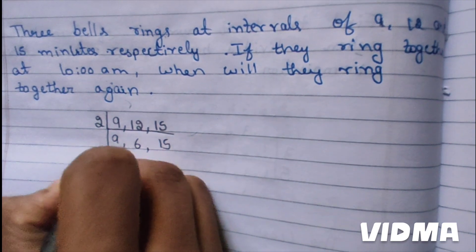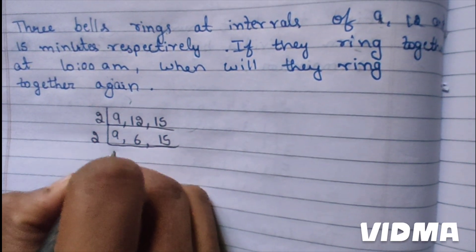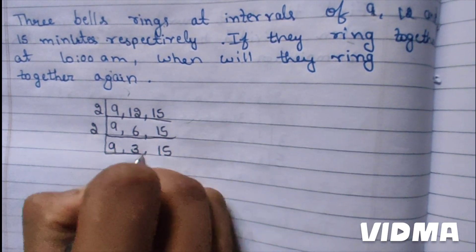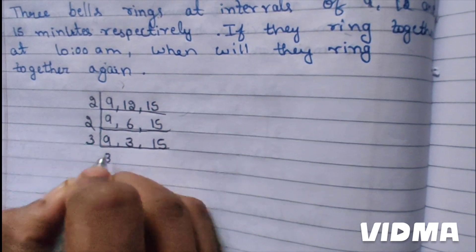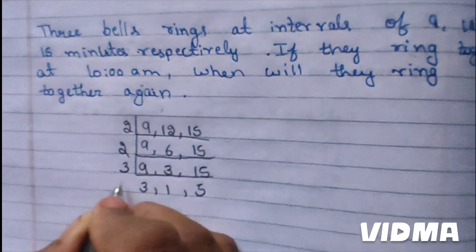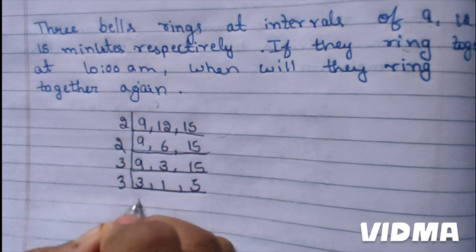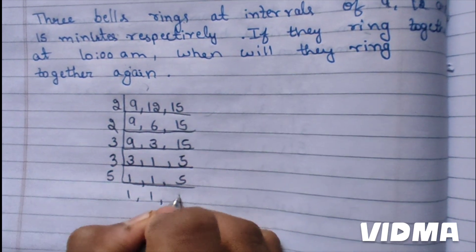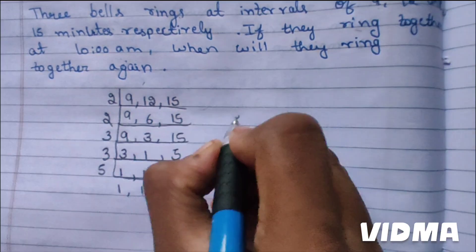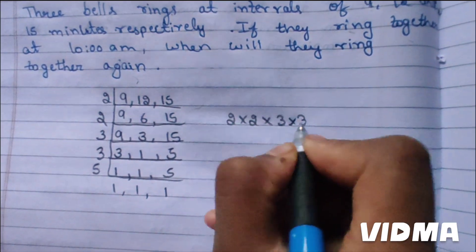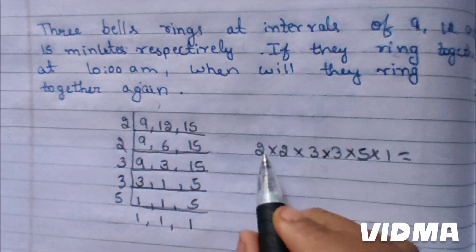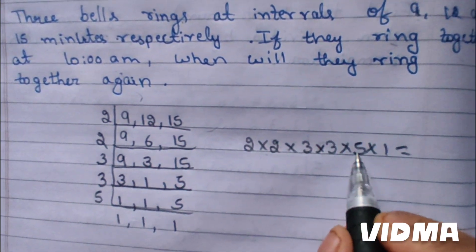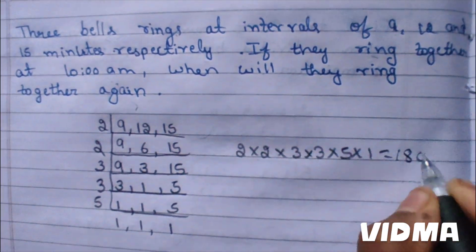Breaking down using prime factorization: 9 gives 3×3, 12 gives 2×2×3, and 15 gives 3×5. So LCM equals 2 × 2 × 3 × 3 × 5. That gives us 4 × 3 = 12, 12 × 3 = 48 — wait, 12 × 3 = 36, then × 5 = 180. The LCM is 180 minutes.